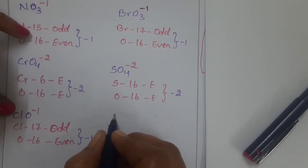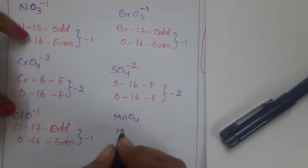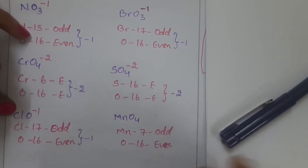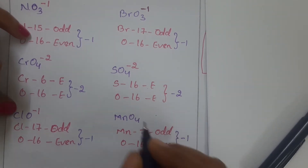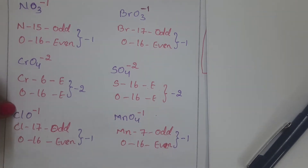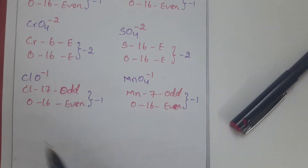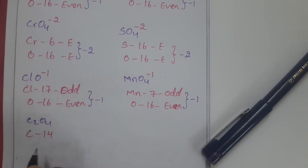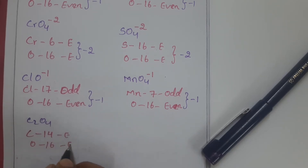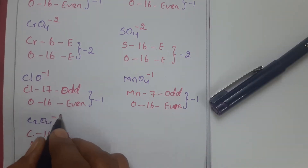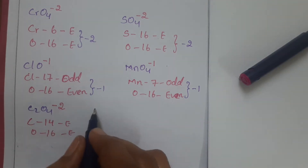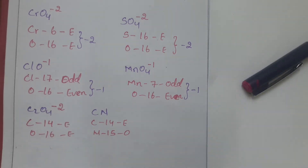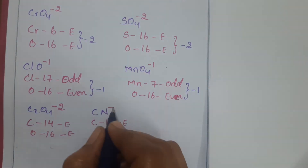Take MnO4. Manganese belongs to the 7th group — odd number — and oxygen belongs to the 16th group — even number. Odd and even means minus 1, so MnO4 is minus 1. Next, take C2O4. Carbon belongs to the 14th group and oxygen belongs to the 16th group. For CN, carbon belongs to the 14th group and nitrogen belongs to the 15th group — even and odd — so the charge is minus 1.